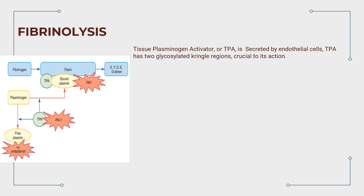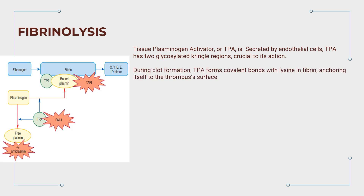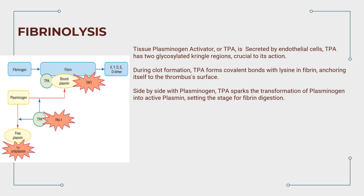Tissue plasminogen activator, TPA, is secreted by endothelial cells and has two glycosylated kringle regions crucial to its action. During clot formation, TPA forms covalent bonds with lysine in fibrin, anchoring itself to the thrombus's surface. Side by side with plasminogen, TPA sparks the transformation of plasminogen into active plasmin, setting the stage for fibrin digestion.